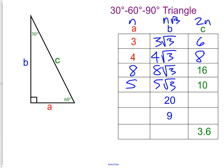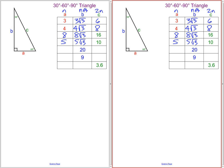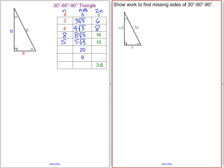So, let's see how we can do that. Okay, so if I am given B, which is 20, that means that n root 3 equals 20.